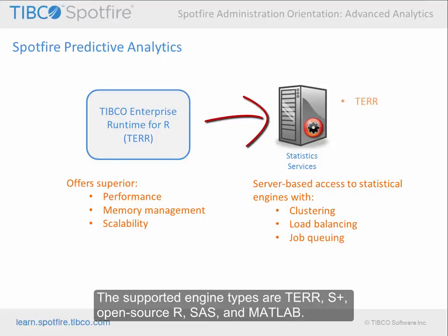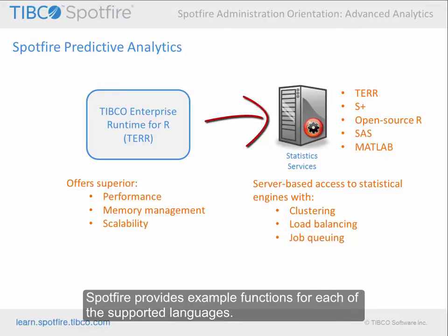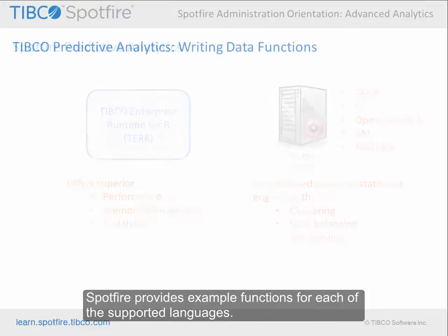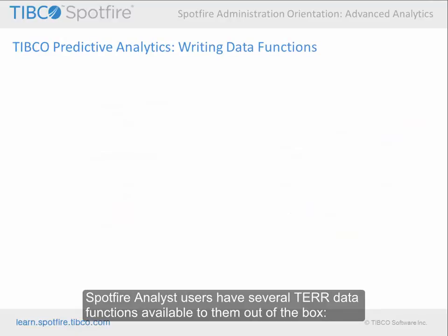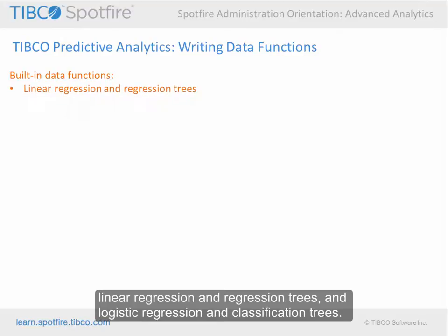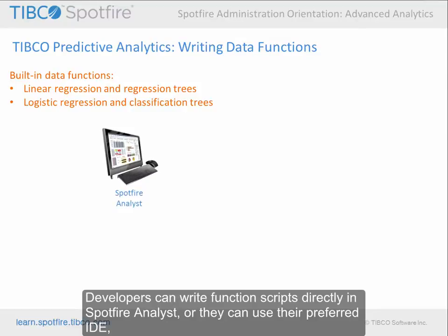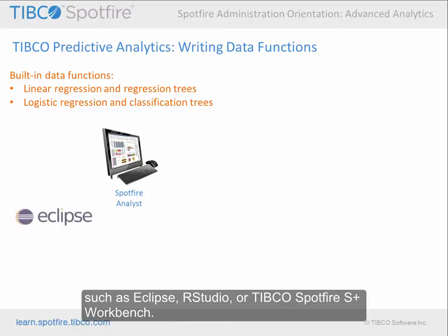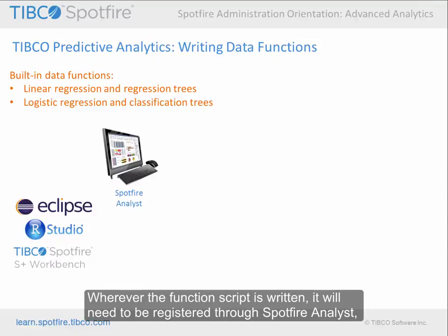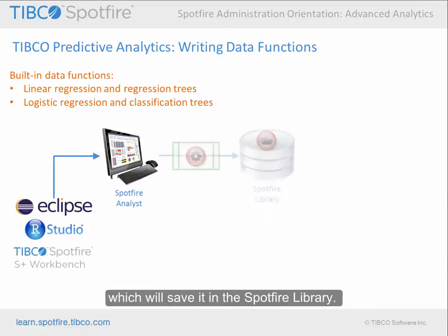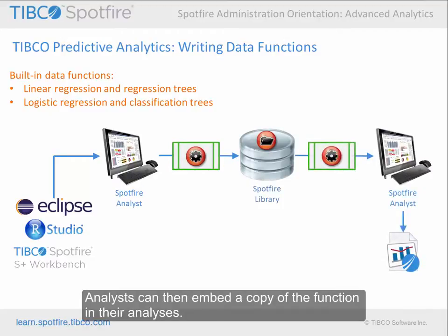The supported engine types are TAIR, S+, Open Source R, SAS, and MATLAB. Spotfire provides example functions for each of the supported languages. Spotfire Analyst users have several TAIR data functions available to them out of the box: Linear Regression and Regression Trees, and Logistic Regression and Classification Trees. Statistical developers can add more in any of the supported languages. Developers can write function scripts directly in Spotfire Analyst, or they can use their preferred IDE, such as Eclipse, RStudio, or TIBCO Spotfire S Plus Workbench. Wherever the function script is written, it will need to be registered through Spotfire Analyst, which will save it in the Spotfire library. Analysts can then embed a copy of the function in their analyses.